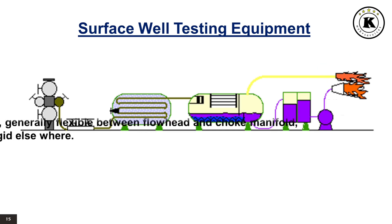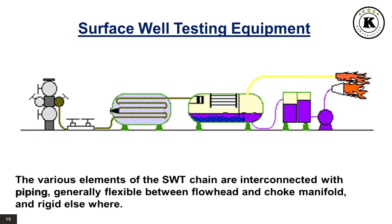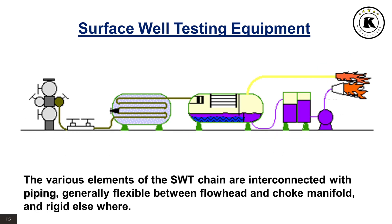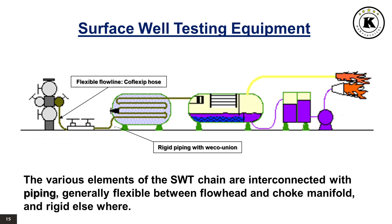The various elements of the surface well testing chain are interconnected with piping — generally flexible between the flow head and choke manifold, and rigid elsewhere.